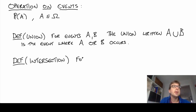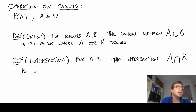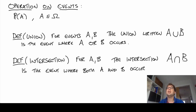Next, the intersection. For sets A and B, the intersection — written A ∩ B (A then an N-shape then B) — is the event where both A and B occur. It is the set of outcomes that belong to set A and also belong to set B.